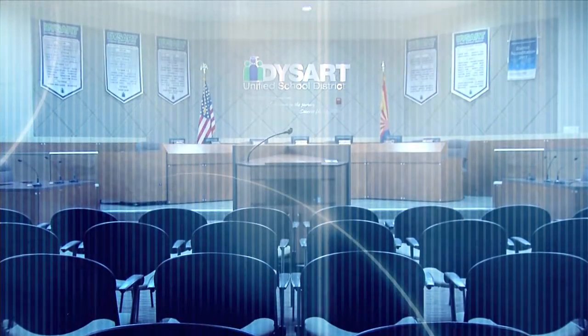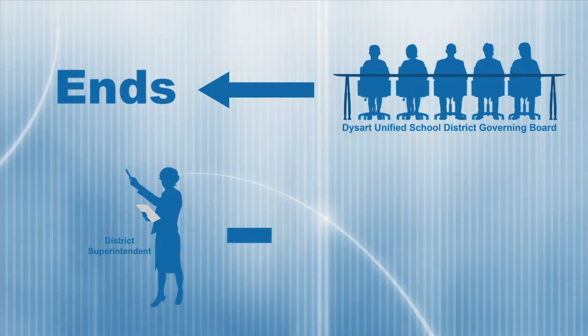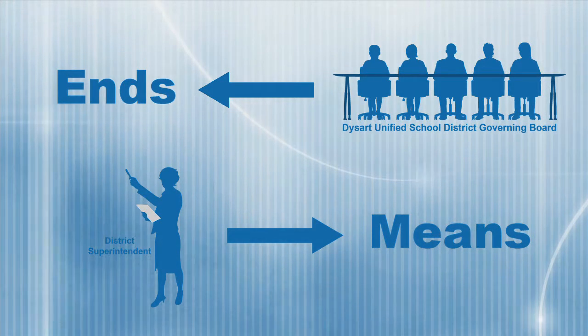Policy governance separates the purpose, or the end result, from other district issues. The district governing board will hold the superintendent accountable for accomplishing the purpose and only limit the staff's available means to those actions which do not violate the board's pre-stated standards. Essentially, the superintendent and staff are given the ability and choice on how to make students more successful. The governing board's role is to ensure that outcome is met — the governing board focuses on the ends, while the superintendent, or CEO, focuses on the means by which the district will reach those end results.